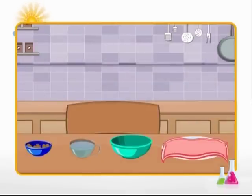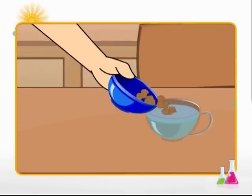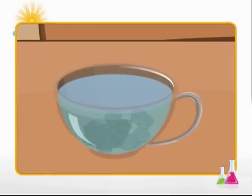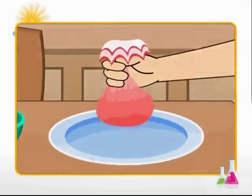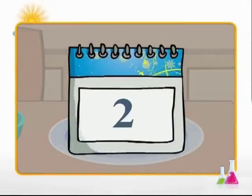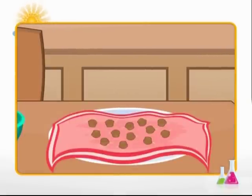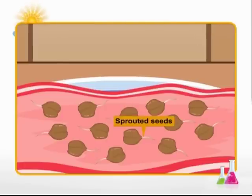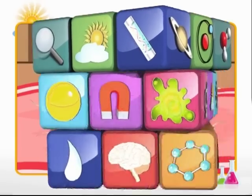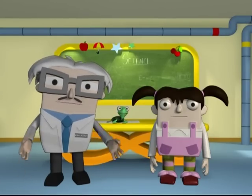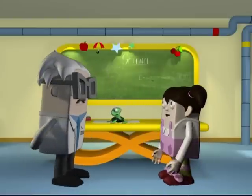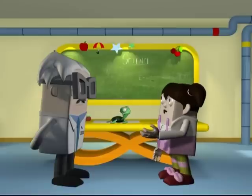Here is an interesting activity for you. Put a few dry seeds of moong or chana into a water-filled cup and leave them overnight. Drain the water from the cup the next day and wrap the seeds with a wet cloth. Now set them aside for one more day. What do you observe the next day? A small white structure has grown out of the seeds — in other words, the seeds have sprouted. Kids, how about you take this activity as homework and see the sprouted seeds for yourself? Excellent idea, Professor. We will carry it to school as well to show my friends.